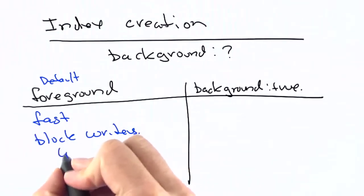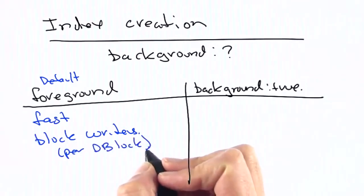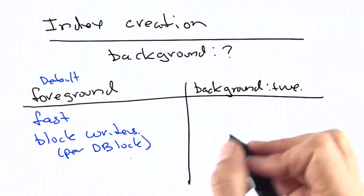In Mongo 2.2 and above, there is a per database lock, so it will block writers only in the same database.